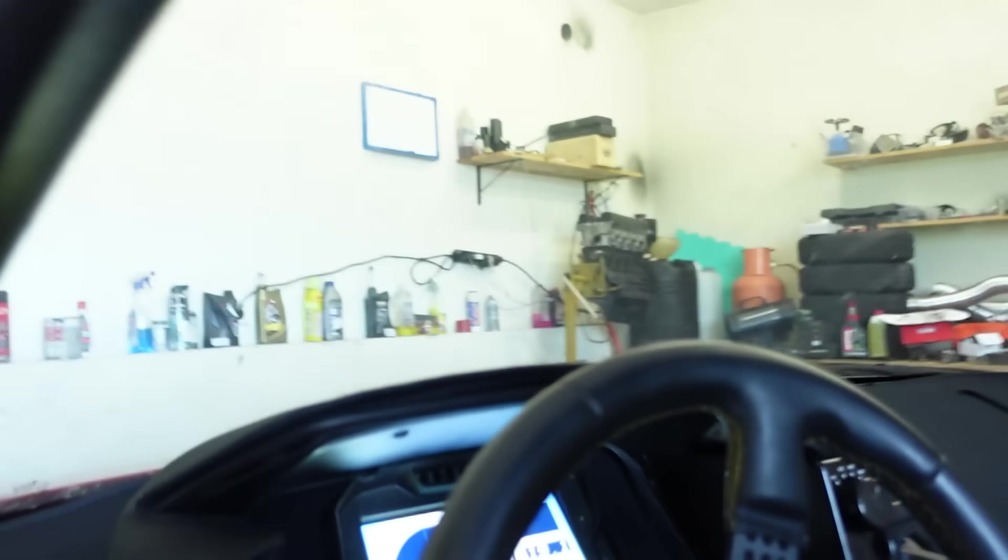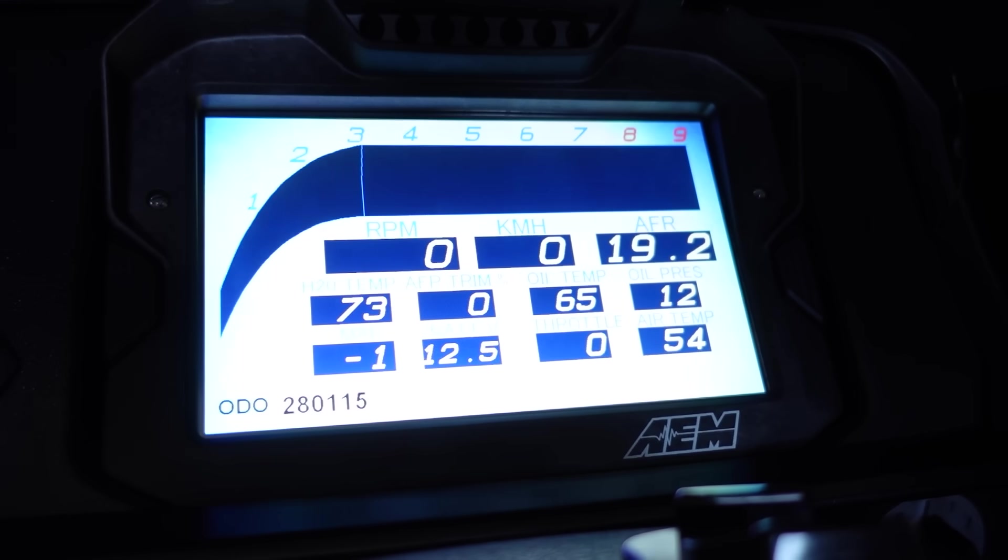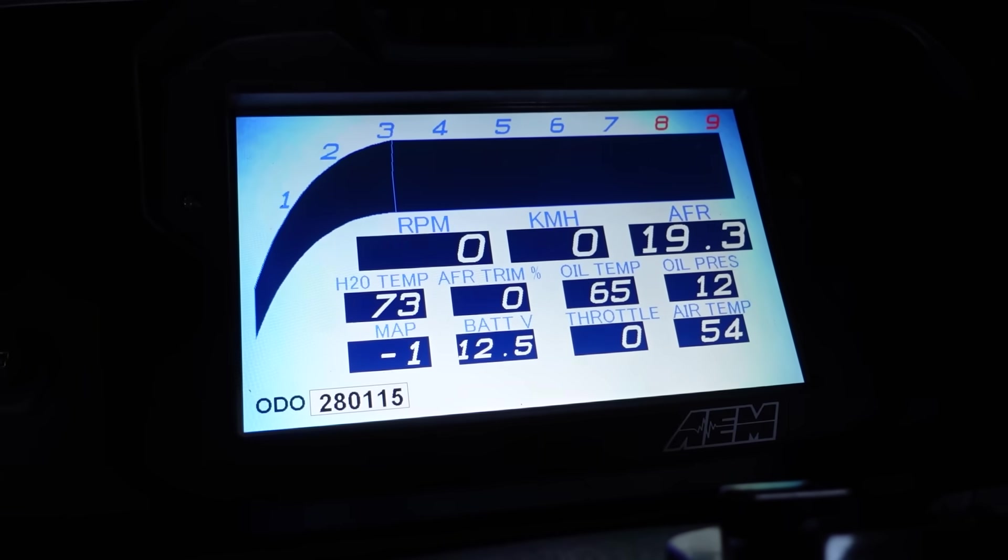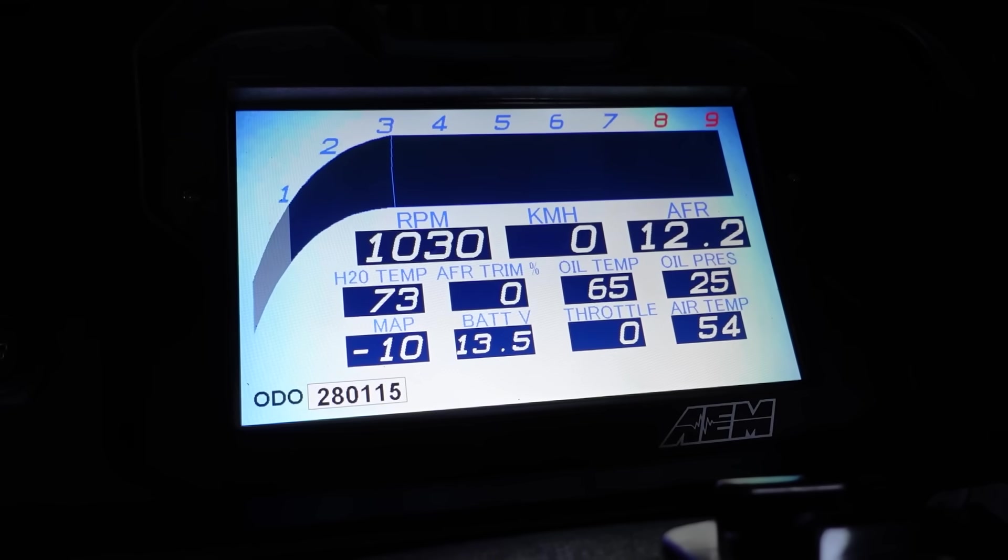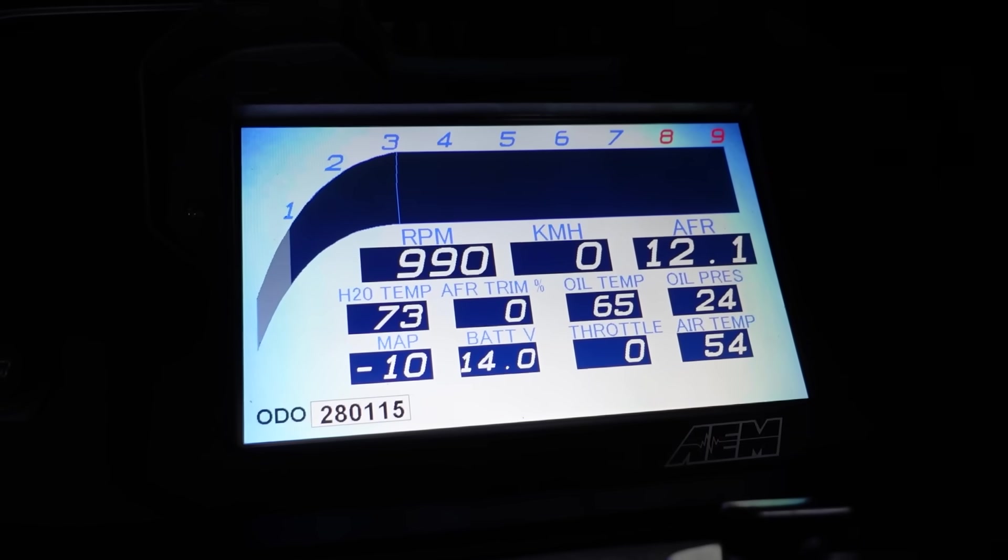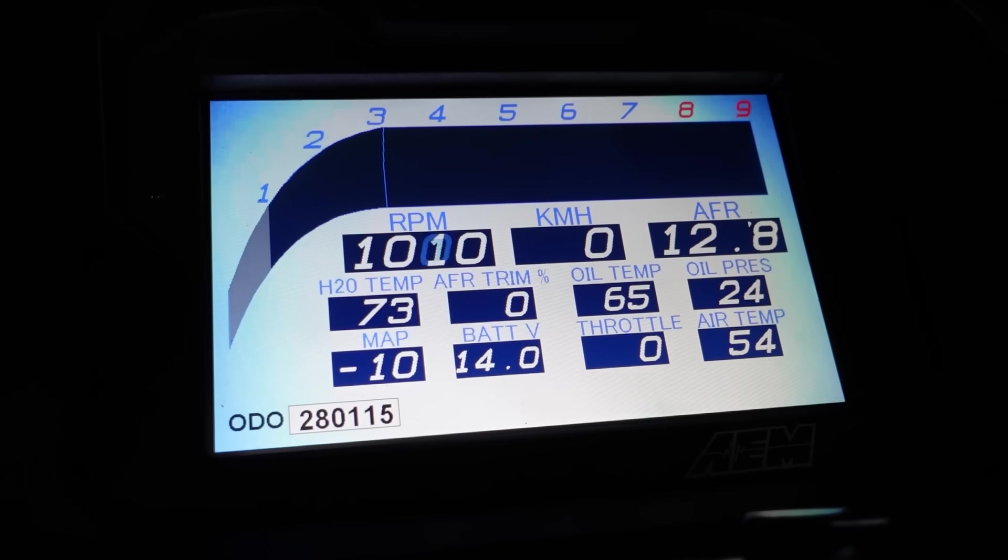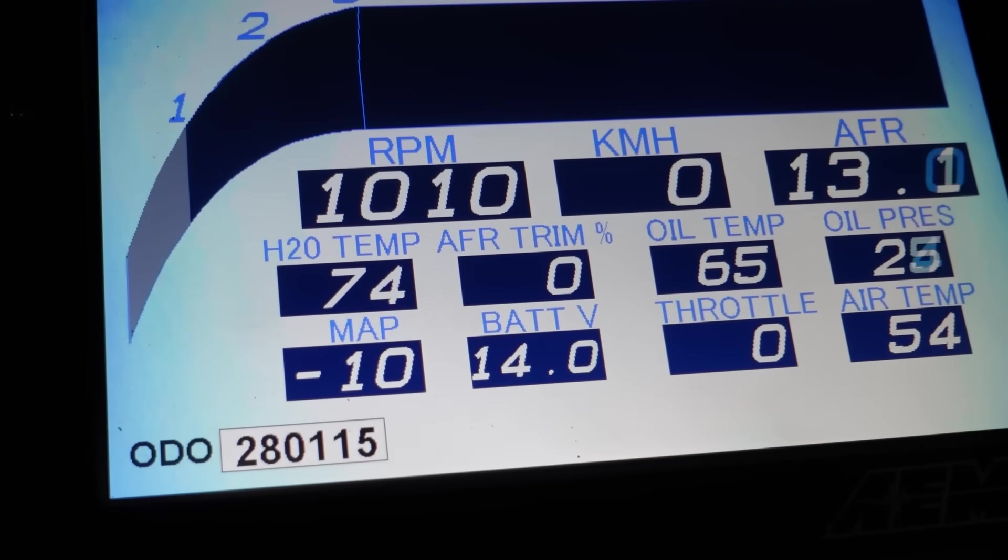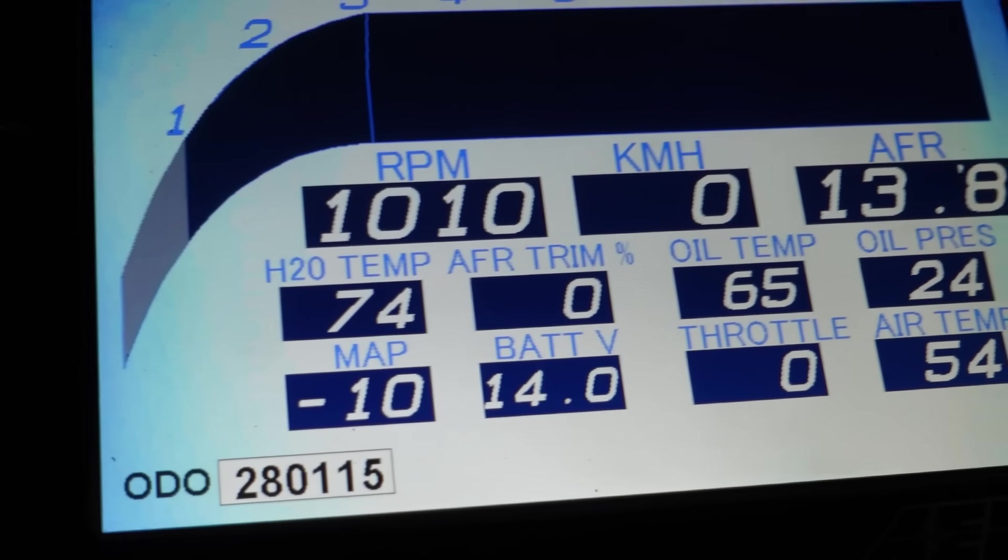Alternatively, if you don't want to use a laptop, you can use a digital dash like this one that lets you see the data while you're driving. Now, let's start the engine. And we're going to observe the AFR trim value right here. Let me zoom in a bit. And this is telling us how much the ECU has to correct to meet the air fuel ratio target.